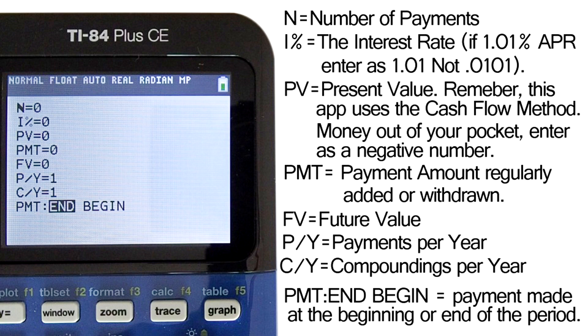The last one, PMT: END BEGIN, is when the payment is made at the end of the period or at the beginning of the period. Leave this at end, unless you have a problem that states that the payments are made at the beginning of each period.